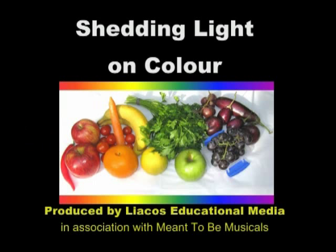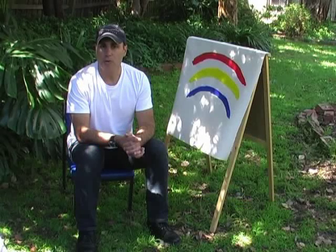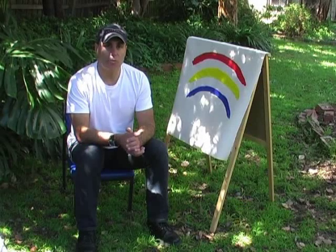Shedding Light on Colour is, as the name suggests, all about the science of colour. It's the first video in the outstanding Shedding Light series of videos, designed for secondary school students studying the topic of light at the Year 9 or Year 10 level. Shedding Light on Colour is 30 minutes long and is broken up into four parts.